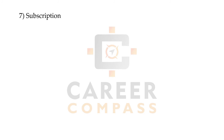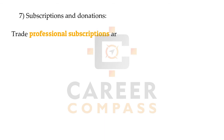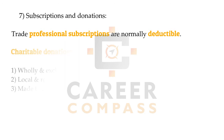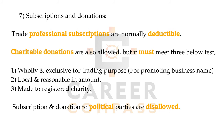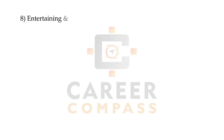The seventh item covers subscriptions and donations. Professional subscriptions are generally allowed — for example, ACCA members can pay membership or subscription fees and those will be allowed as a deduction. To claim a deduction for charitable donations, three conditions must be fulfilled as shown. However, any donation to a political party will not be allowed.